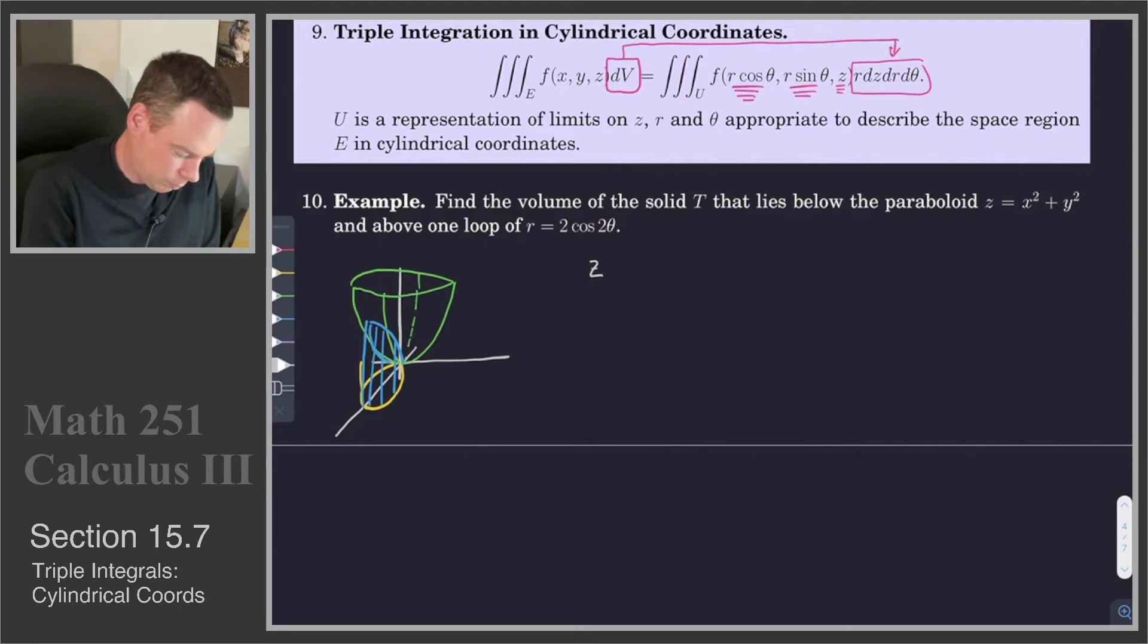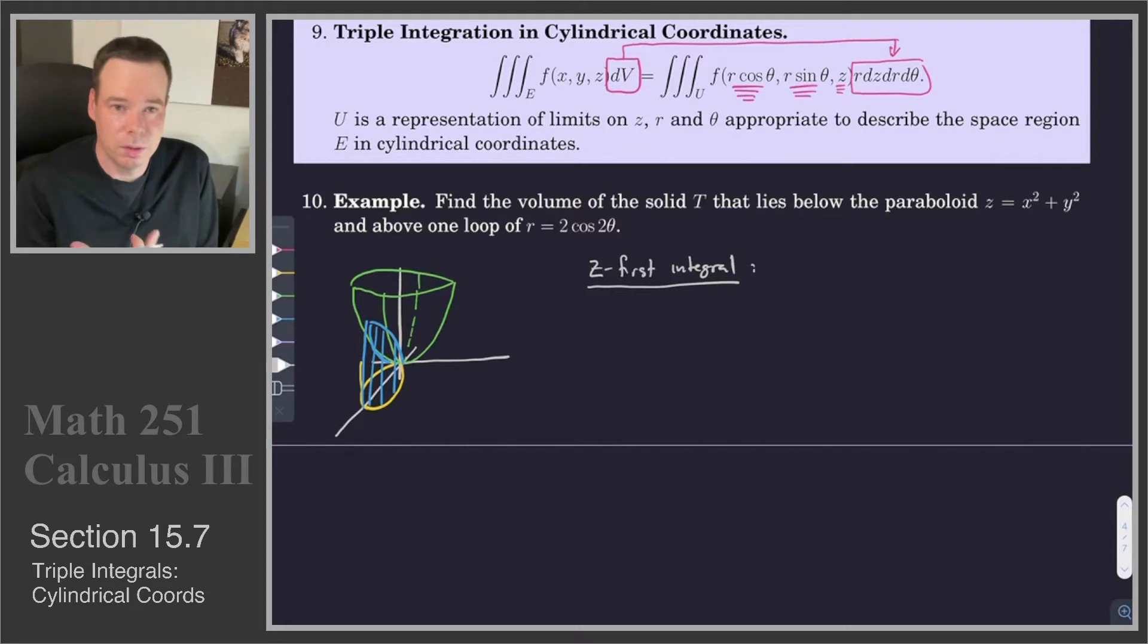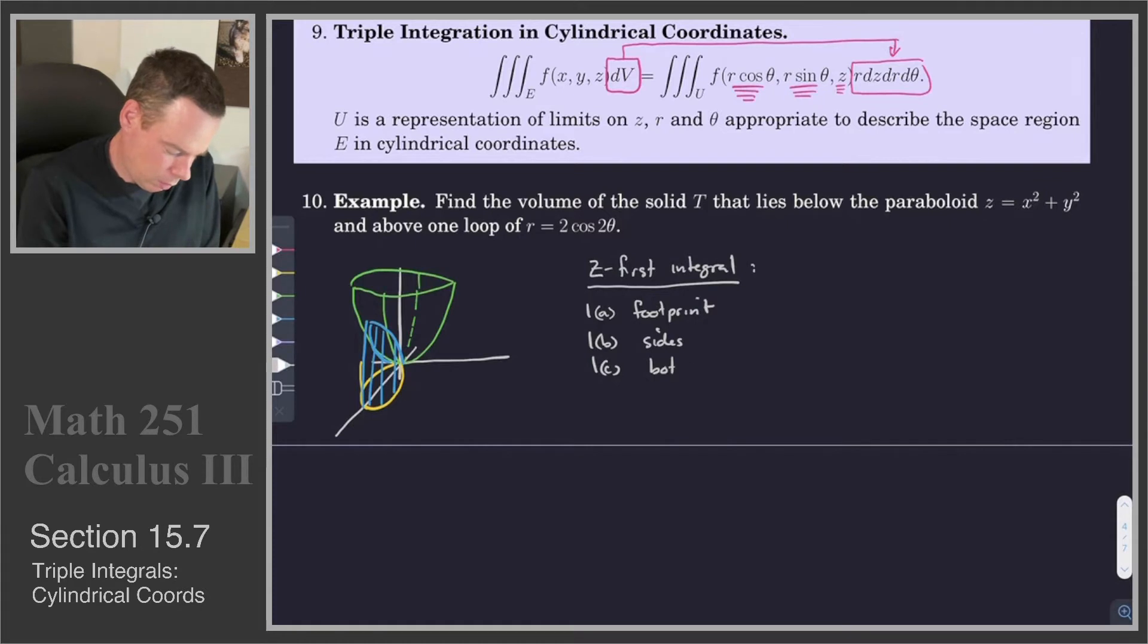We're going to do a Z first integral. If we do a Z first integral, then we can do the double integral as a polar integral, an integral over polar coordinates. And that means that we're doing a cylindrical coordinate integral over the whole thing. Our Z first integral means we're going to need to figure out what is our footprint, the sides, the bottom and the top. And then for the 2D region, we need to figure out how to deal with that 2D region.